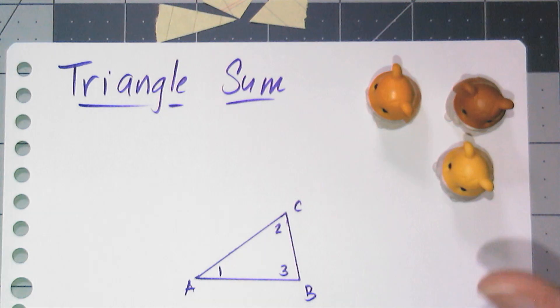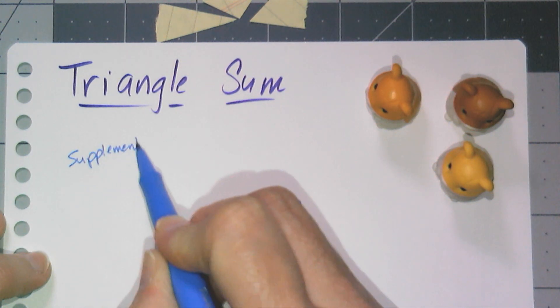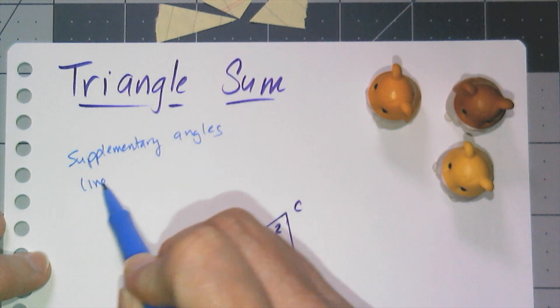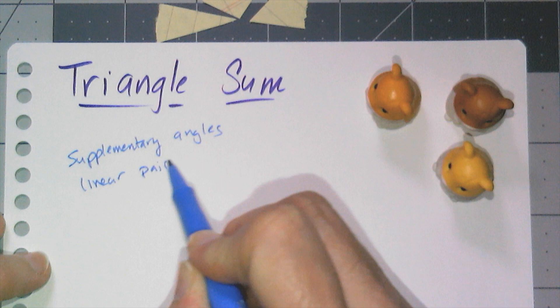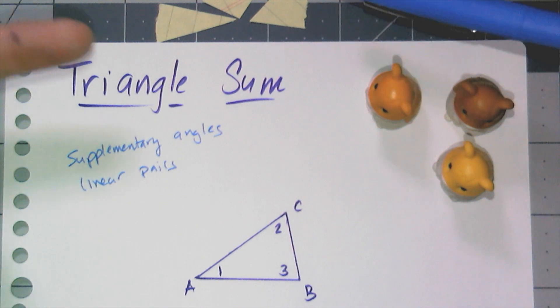So I'm going to think back, and do I have any conjectures that have angles adding up to 180 degrees? Yes, I do. I have supplementary angle definitions, right? And I have linear pairs. Now there's problems with both of those, because supplementary angles and linear pairs require two angles, and what I have are three.